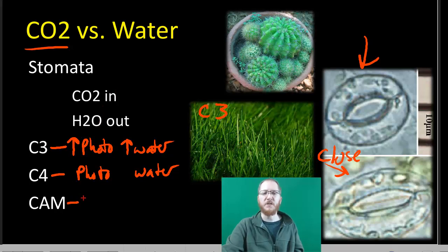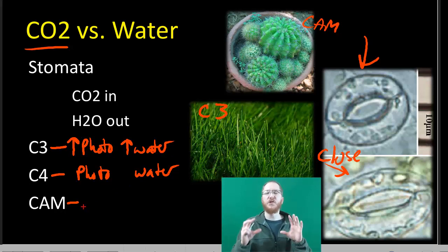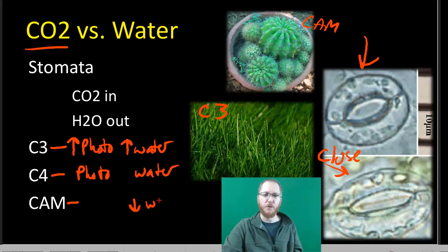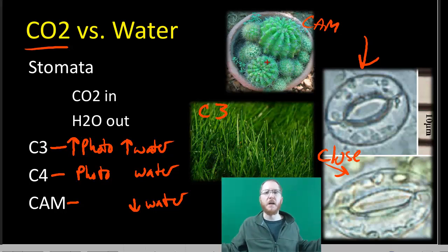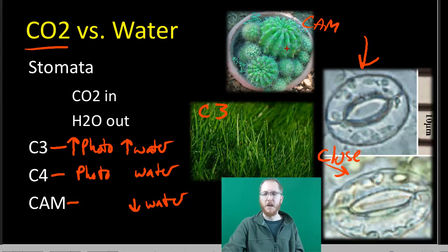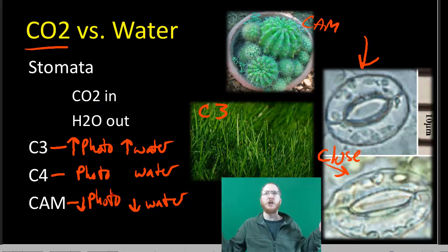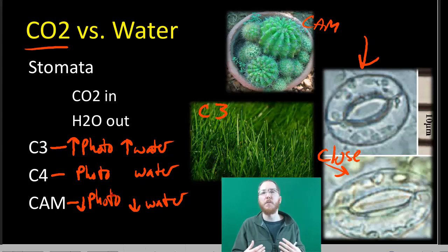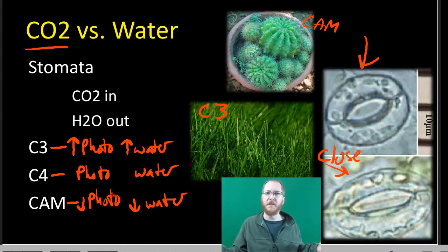That brings us to CAM plants, which are succulents like cacti. These don't even open their stomata during the day — they keep them closed and store CO2 in their cells at night. That means they waste almost no water, and their water usage is ridiculously low. They also minimize surface area by having needles or very fat leaves, doing everything they can to conserve water — which is also why many have needles to protect against organisms trying to take their water. The downside is they do photosynthesis the slowest. That's why you don't see cacti in a rainforest — they get out-competed by C3 or C4 plants — but they thrive where the other guys die.